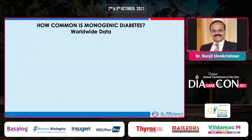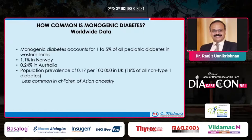How common is monogenic diabetes globally? Monogenic diabetes accounts for around 1 to 5% of all cases of pediatric diabetes in many Western countries, mostly from Western Europe. The prevalence is around 1% in Norway, much lower at 0.24% in Australia from population-based studies, and a population prevalence of 0.17 per 100,000 in the UK.